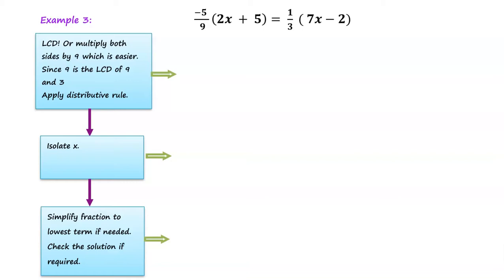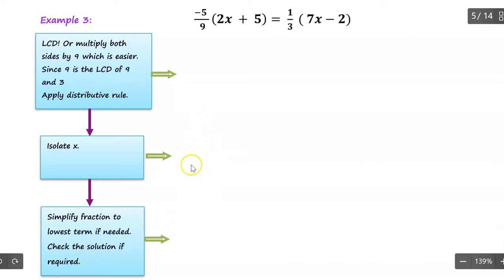For example number three, I will perform two ways of solving for x. In doing two ways, I will probably skip step number four, which is to check the solution by verifying the left-hand side equals the right-hand side. I will let you do that, as it's quite lengthy. I will just apply two methods for this example number three.